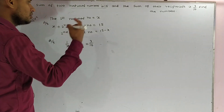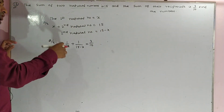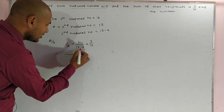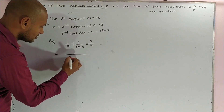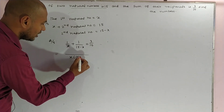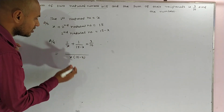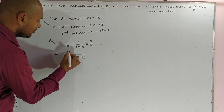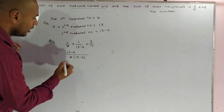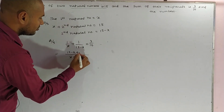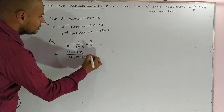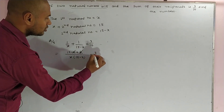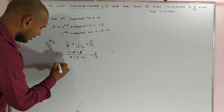From here, if you take the LCM of x and (15 minus x), the denominator becomes x(15 minus x). The numerator: (15 minus x) multiplied by 1 gives (15 minus x), and x multiplied by 1 gives x. The x terms cancel, leaving 15, and this equals 3 upon 10.